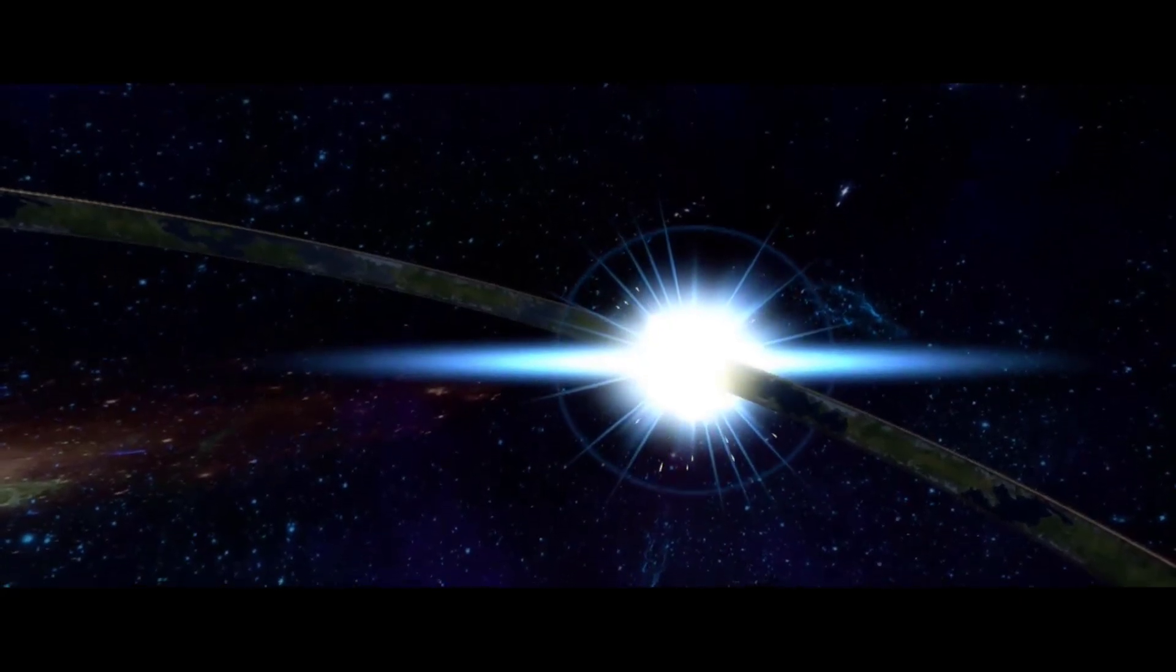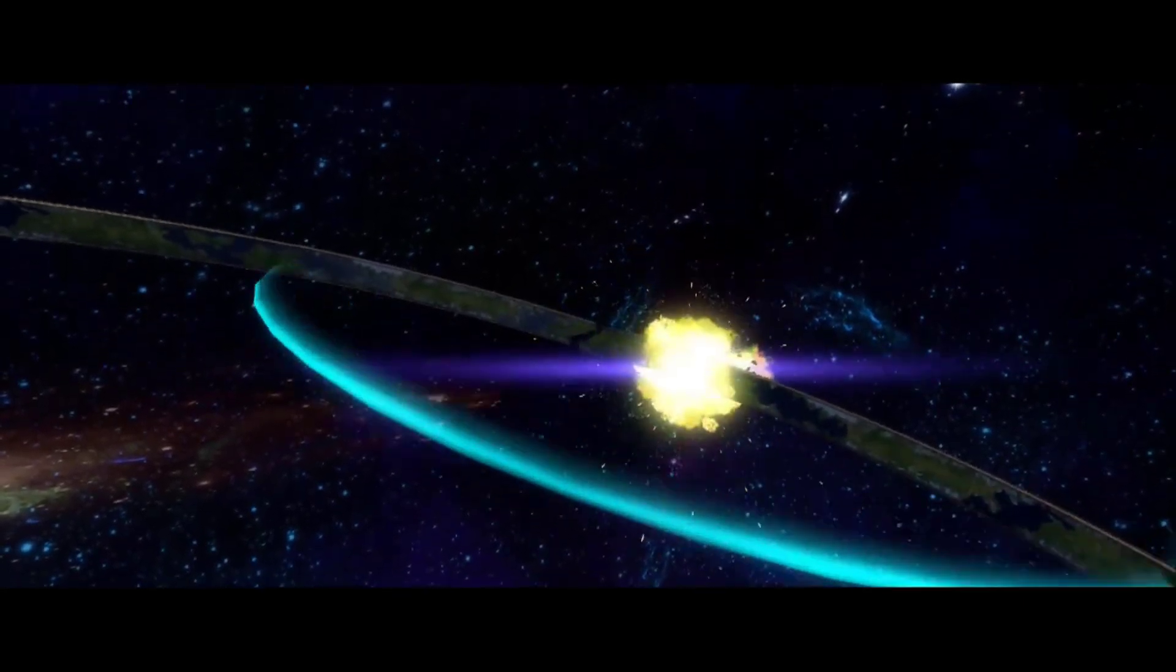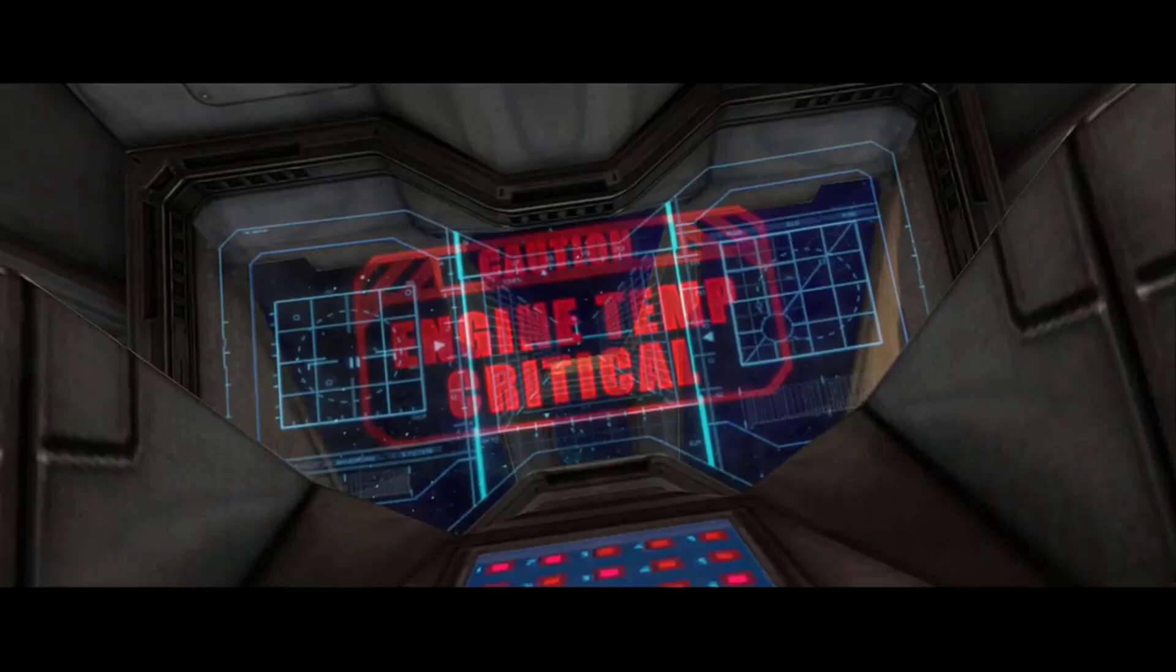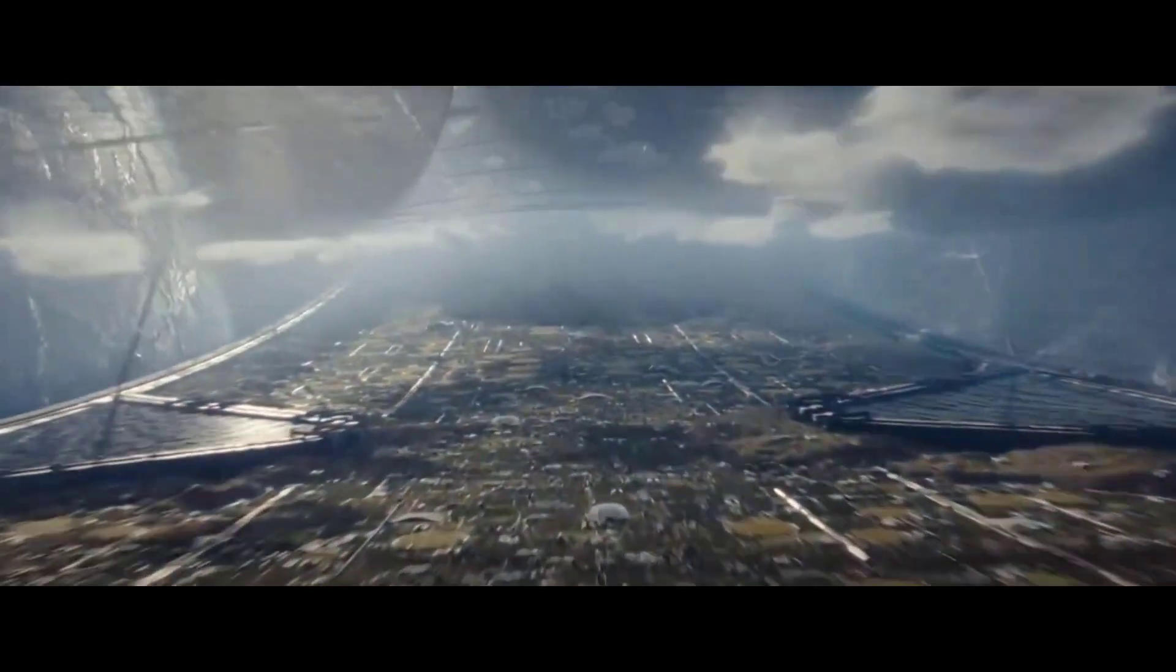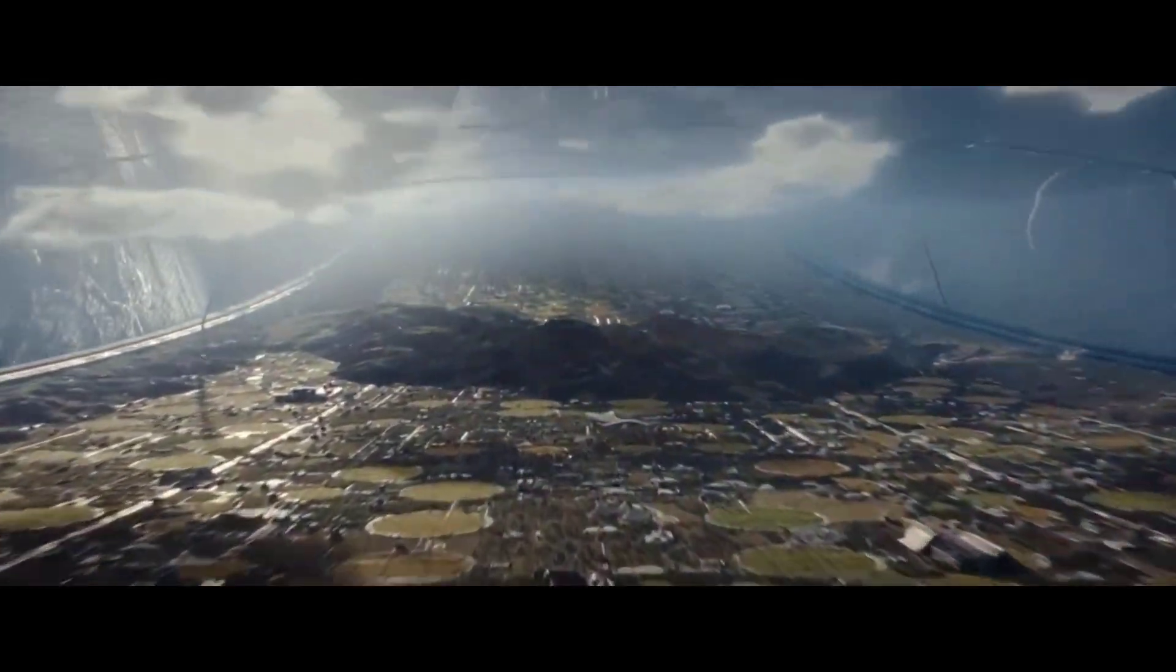Imagine a ring so enormous that its inner surface area could be equal to literally millions of Earths. The surface is designed to mimic a planetary environment, complete with cities, forests, oceans and habitable spaces.